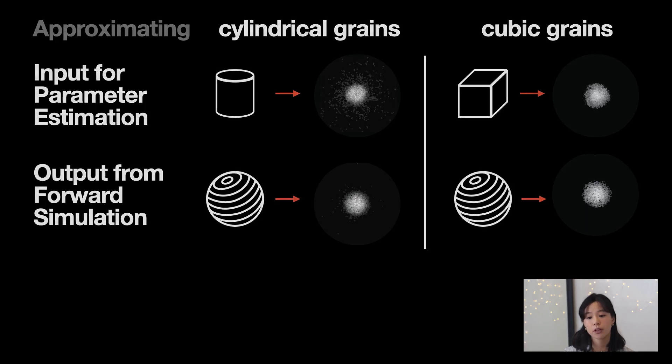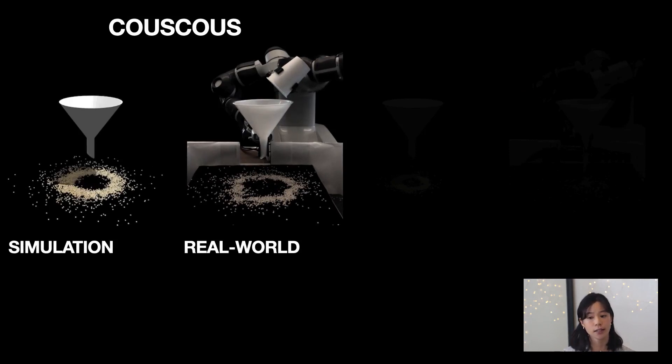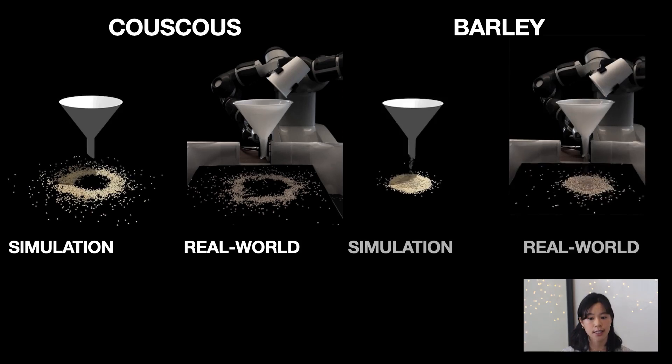Once we were satisfied with the performance of the framework for inferring simulation material parameters from simulated depth images, we transitioned to testing whether the framework could calibrate the simulator to represent real agricultural grains like couscous and barley. Indeed, forward simulation with the estimated parameters captured similar macroscopic behavior.